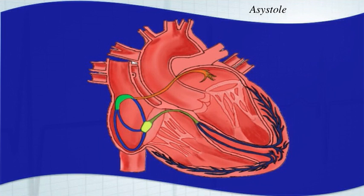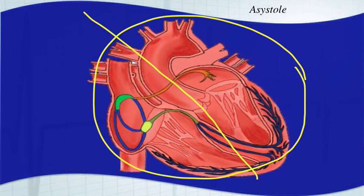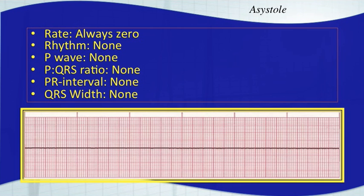Asystole is literally the absence of systole, meaning that there's no electrical or mechanical activity coming from the heart. So just draw a big line through it because there's no conduction, no depolarization happening. You get what's known as a flatline. A lot of times you'll hear in different movies or TV shows they'll say he's flatlining, and what they really mean to say is the patient's in asystole. It is the worst arrhythmia to be in.